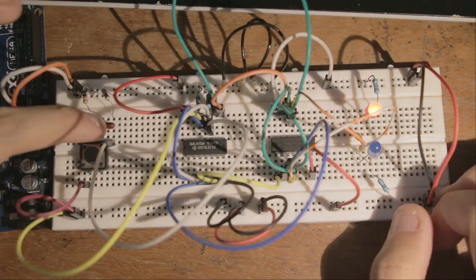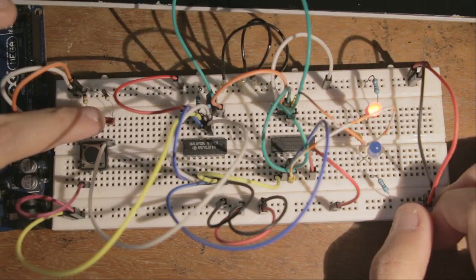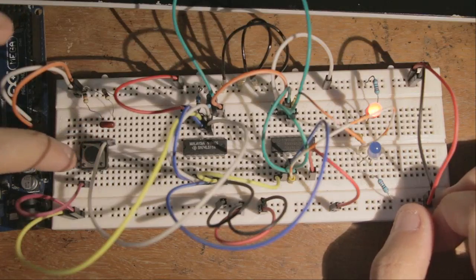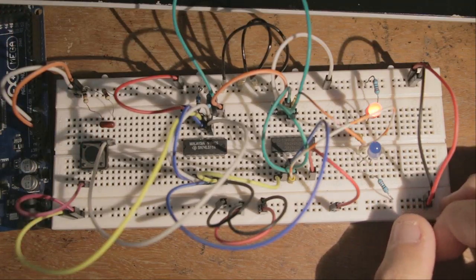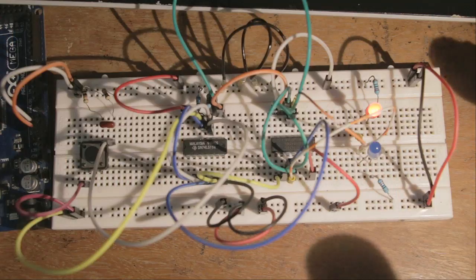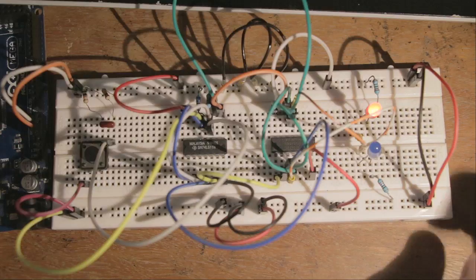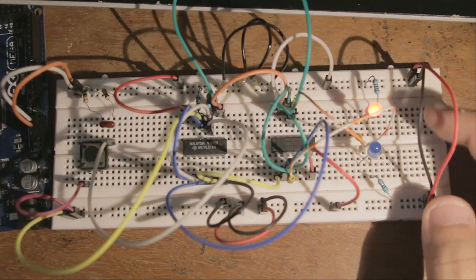Now, the more eagle-eyed among you would have realized that this isn't the same capacitor as I've been using in the previous episode. This is actually a 0.1 microfarad capacitor, so it has much less capacitance. And the reason for this is because the other capacitor creates a pulse that is way too long, and it creates some sort of oscillation here.